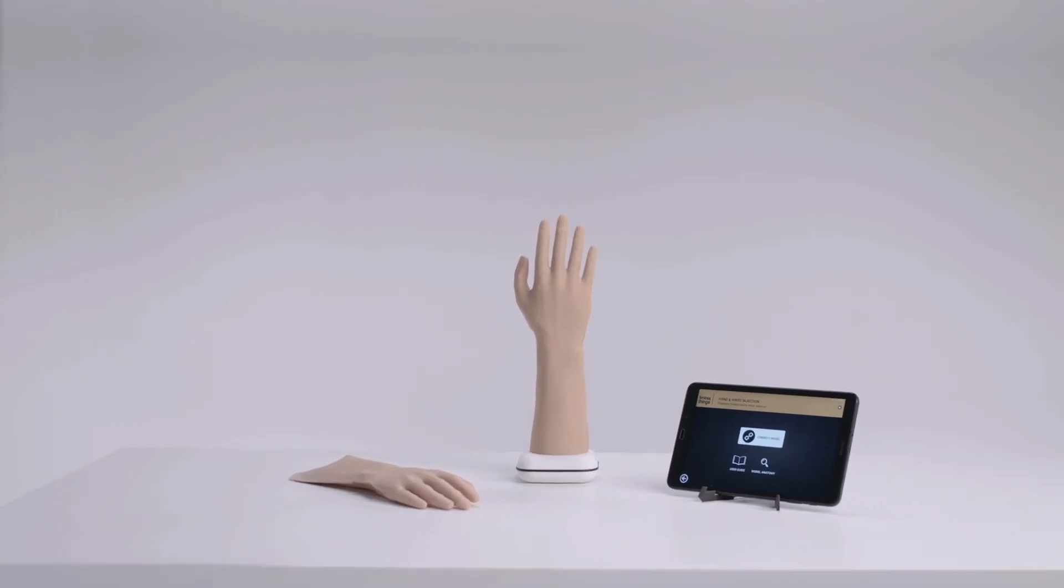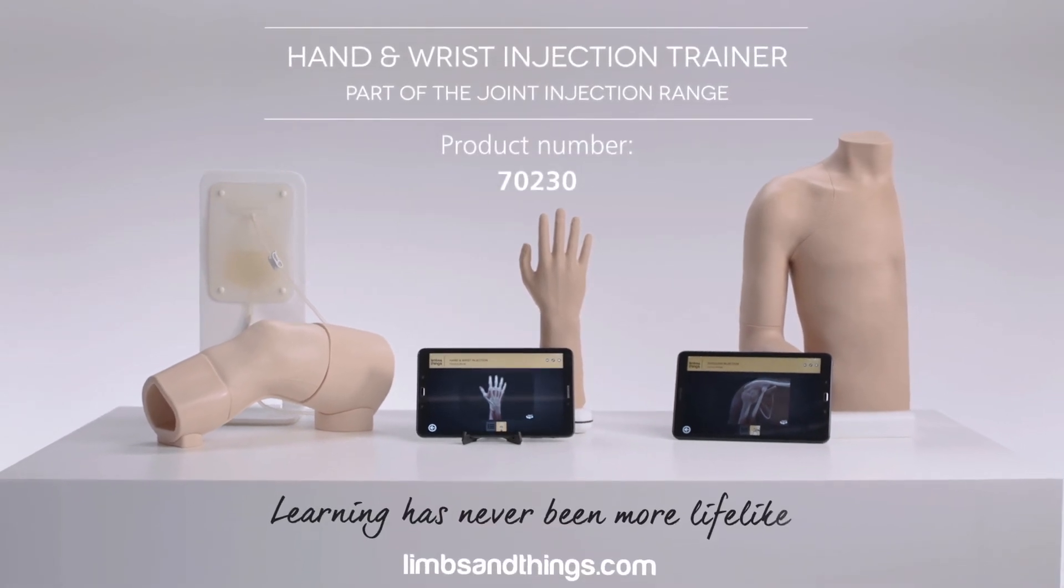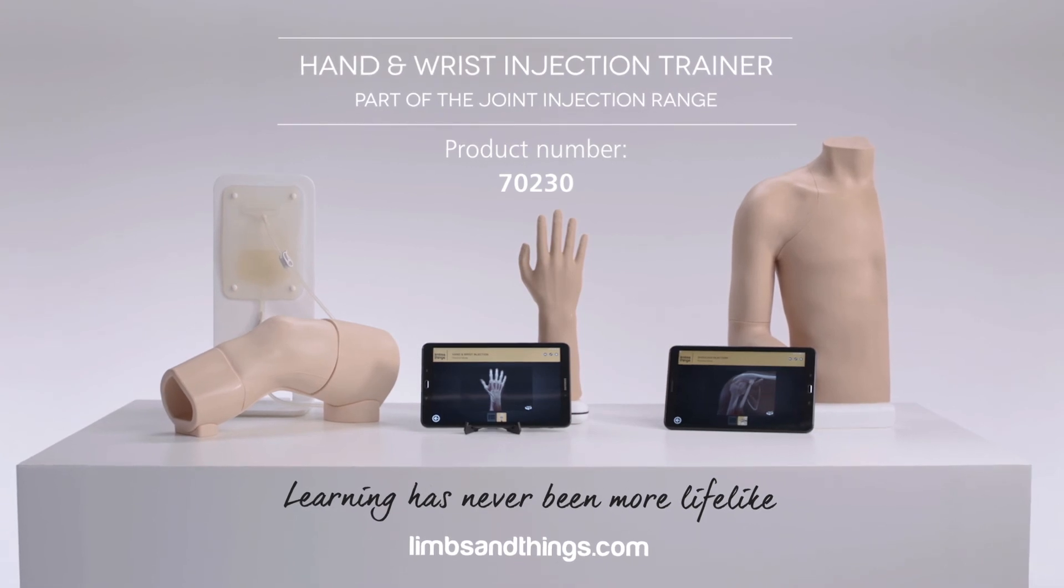The Hand and Wrist model, part of the Joint Injection Range from Limbs and Things, provides repeatable training to build trainee confidence and accuracy of injections for better patient outcomes.